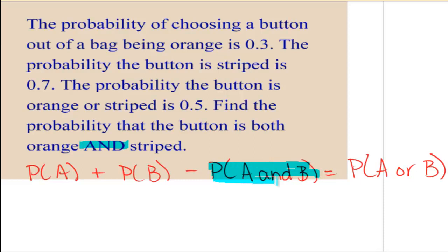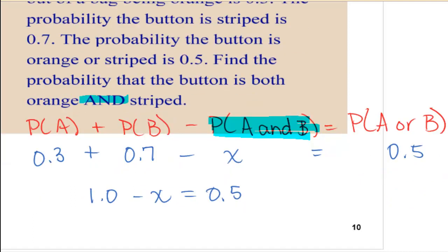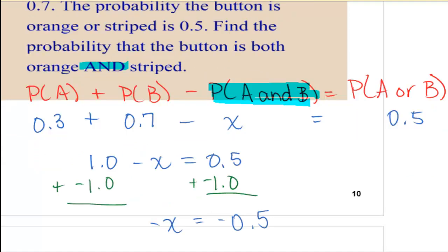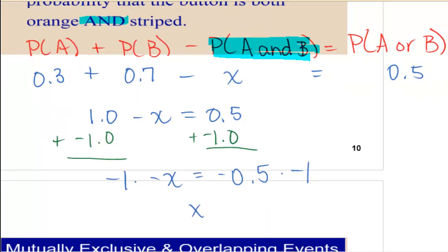I'm solving for the and. We know all the other information, so we're going to let our and be our variable and substitute everything in. The probability of being orange is 0.3, and our other event is 0.7, or striped. And the or is 0.5. So what we don't know is the and, and that's what we're solving for. How would you approach this? Like an equation. Start by simplifying the left-hand side, and then solve. Start isolating your variable. Once you've isolated your variable, notice that we have a negative on both sides. So you do need to multiply both sides by negative, and we get x equals 0.5.